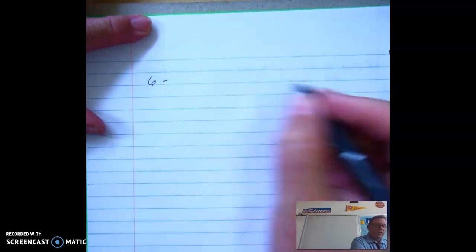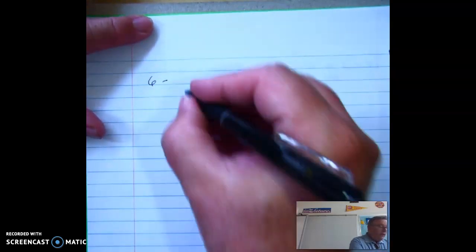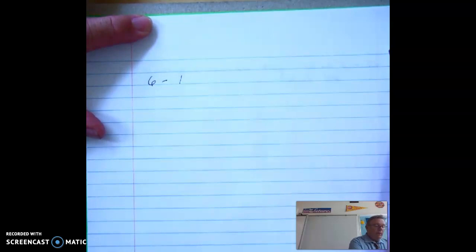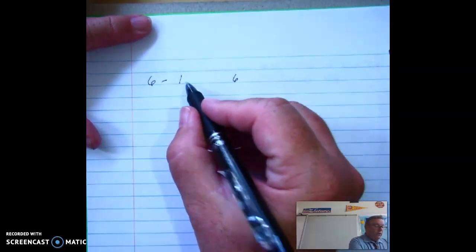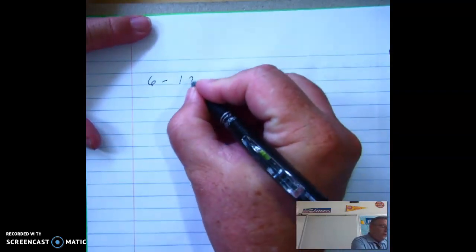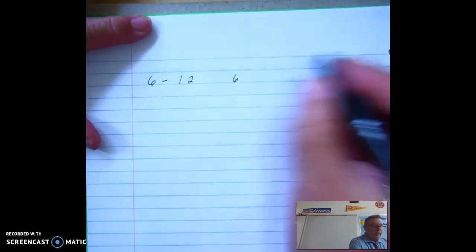What I always do is start with the smallest. We know that one is a factor of everything. So one, what would I multiply one by? Six. So there's two factors. Let's see if it's a composite. One doesn't work. Does two work? Two works. What would you multiply two by?